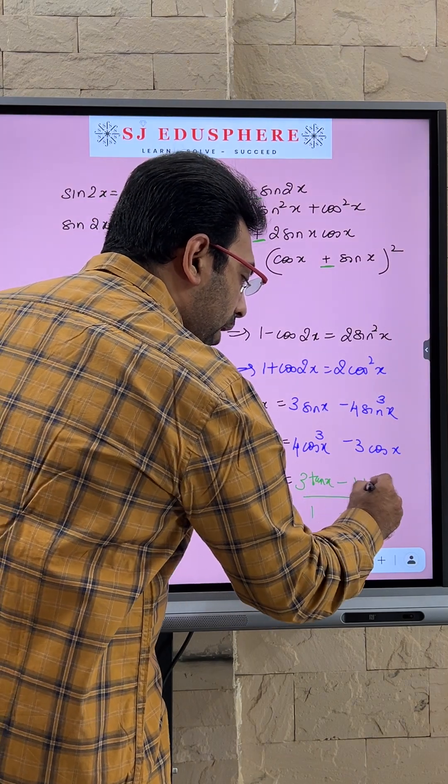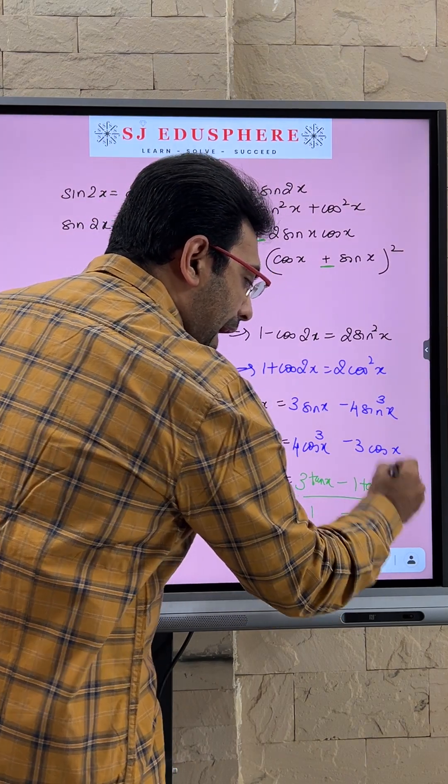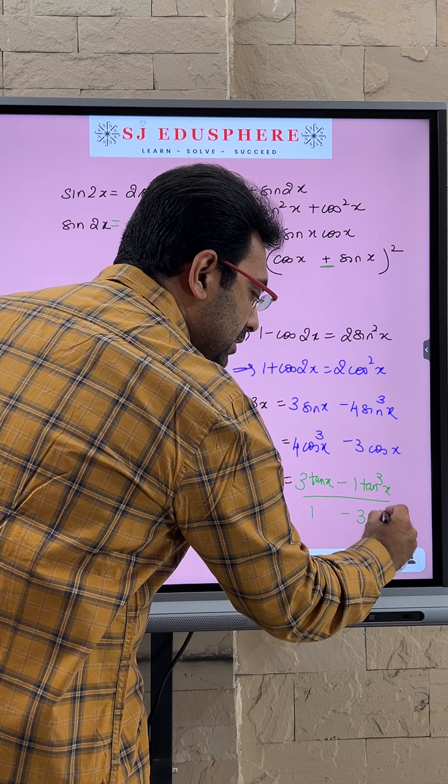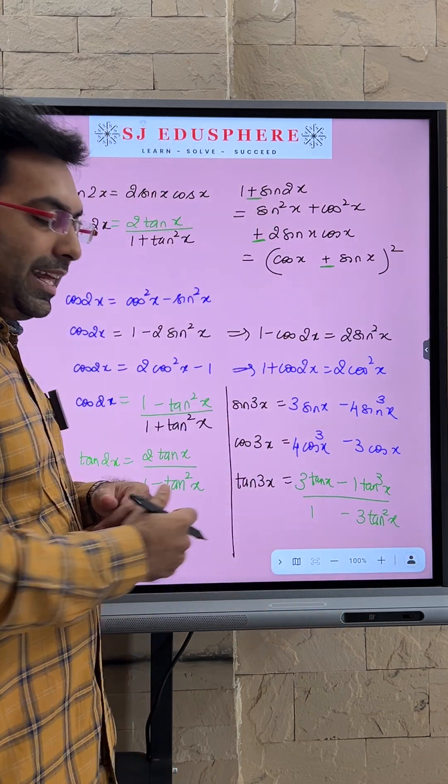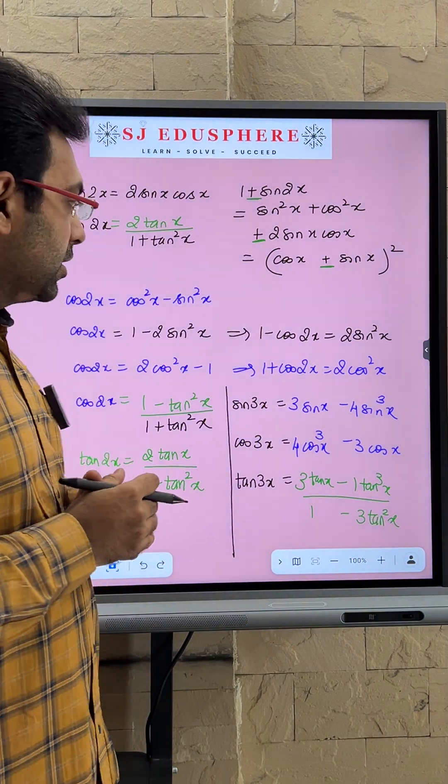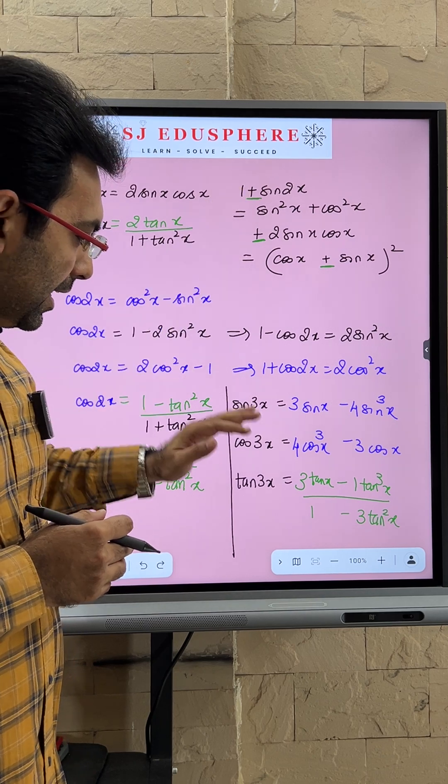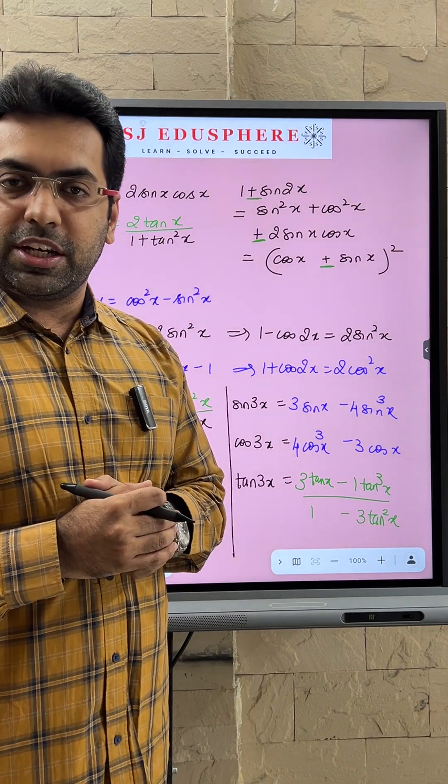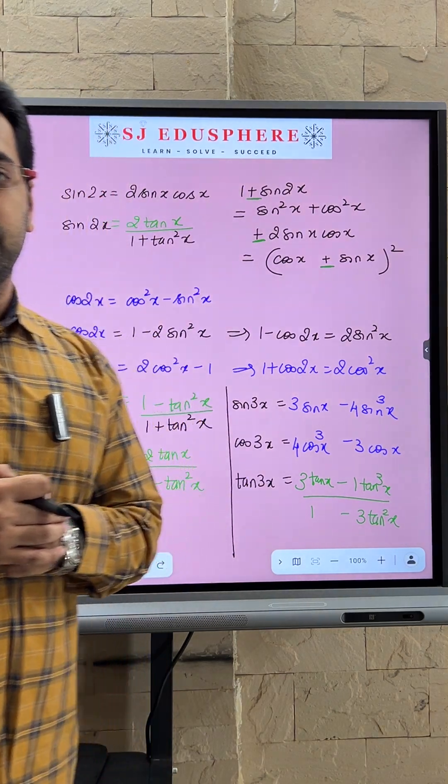And 1, 1 power less. Well, that derives my entire formula list for half angle, double angle, and triple angle formula sheet. Happy learning, happy learning.